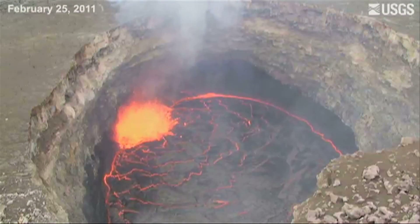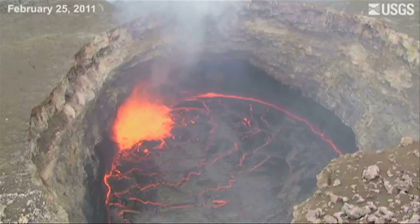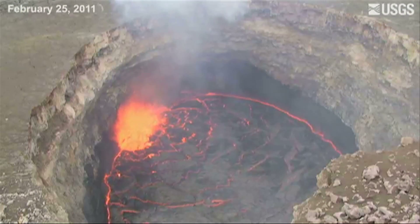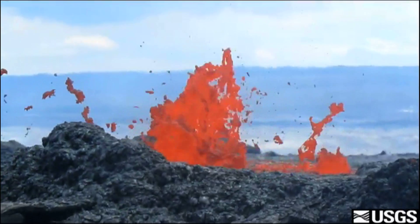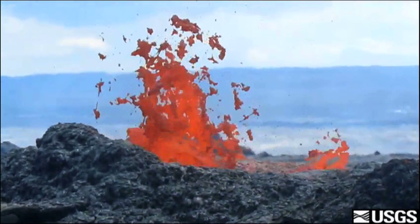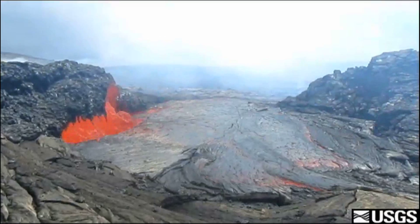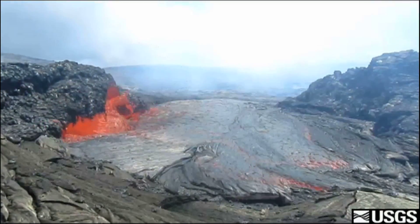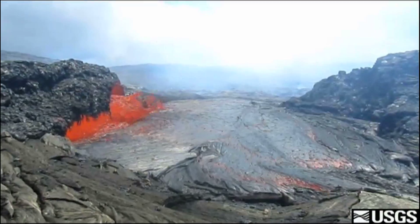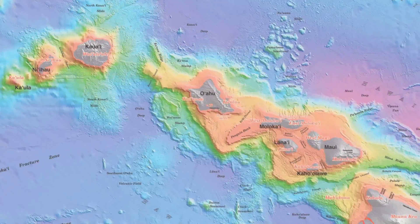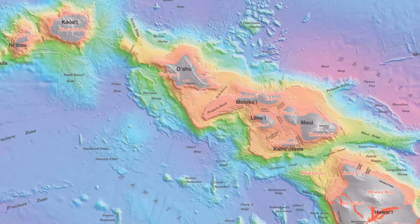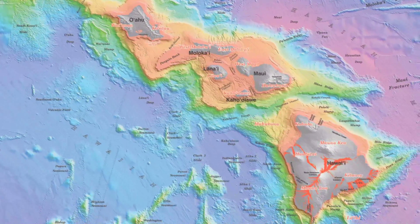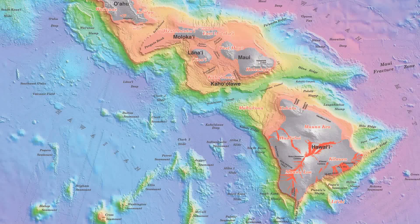The Archean Eon covers the time period between 3.8 and 2.5 billion years ago. During this time, two major events took place: life on Earth began, and the cooling of the Earth led to the formation of continental crust.